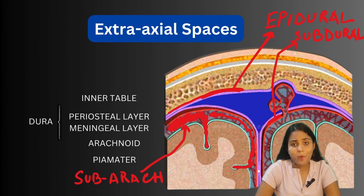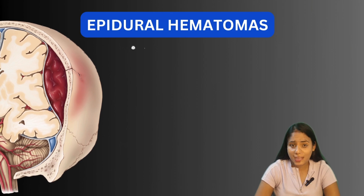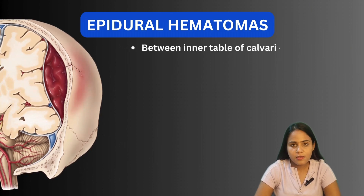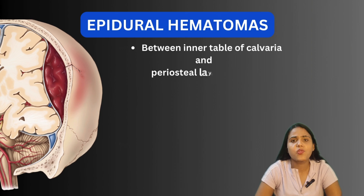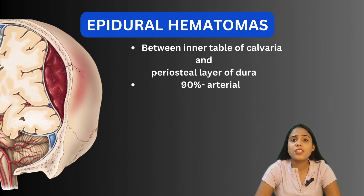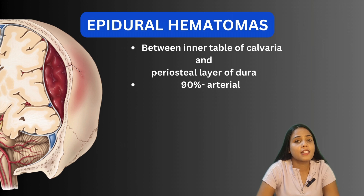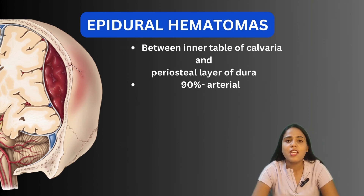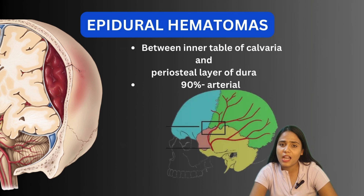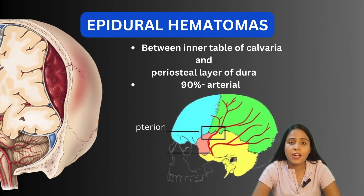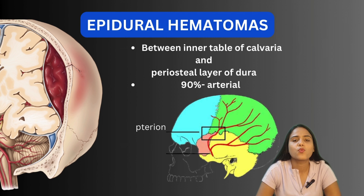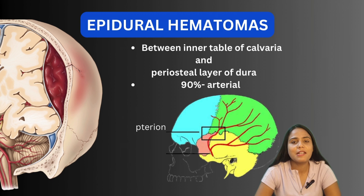Epidural hematomas occur when there is bleeding between the inner table of the calvaria and the periosteal layer of the dura. 90% of the time the source is arterial. The most common artery implicated is the middle meningeal artery, a branch of the maxillary artery, which is in turn a branch of the external carotid artery. It is in close relation with a very thin part of the skull called the pterion — a junction of the frontal, sphenoidal, parietal, and squamosal part of the temporal bone — which is very susceptible to fracture.